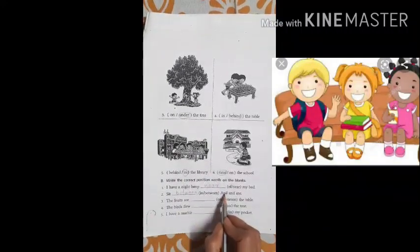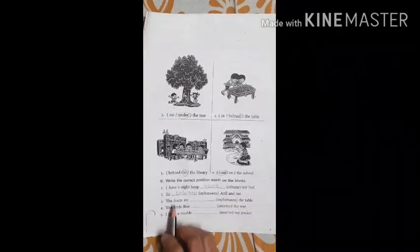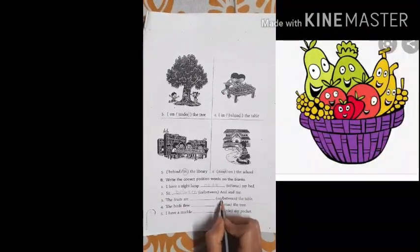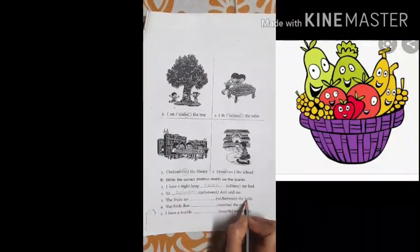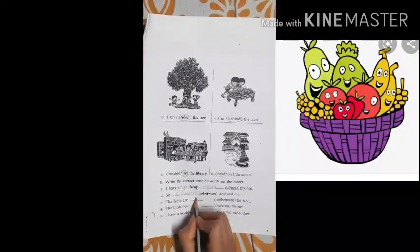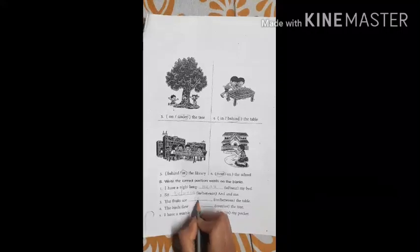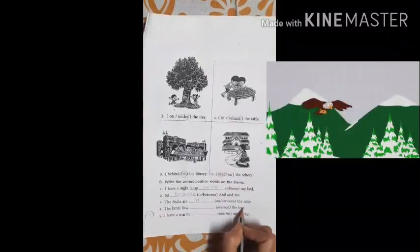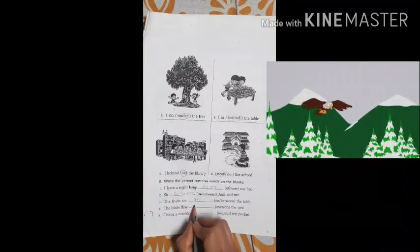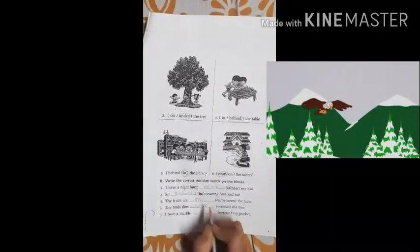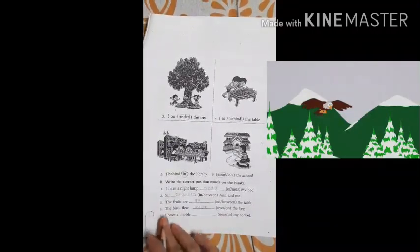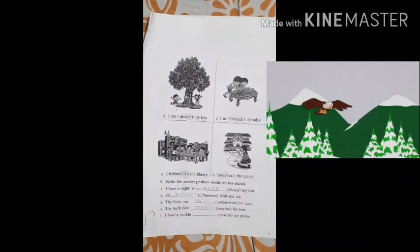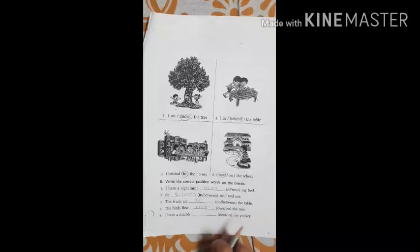Sit between Anil and me. The fruits are — on or between — the table. The fruits are on the table. The birds flew over or on the tree — the birds flew over the tree, meaning the birds are up above the tree.